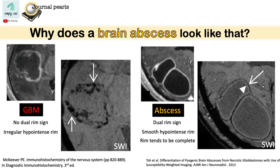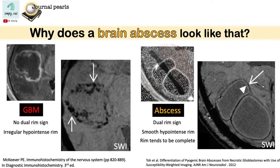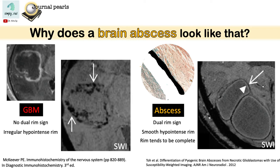So why is there no dual rim sign in glioblastoma? In the abscess, the inner hyper-intense rim is made by the granulation tissue, which is a mix of collagen, fibroblasts, macrophages, and other inflammatory tissue. You do not expect to see this kind of tissue in glioblastoma, so we do not expect to see the dual rim sign in GBM.